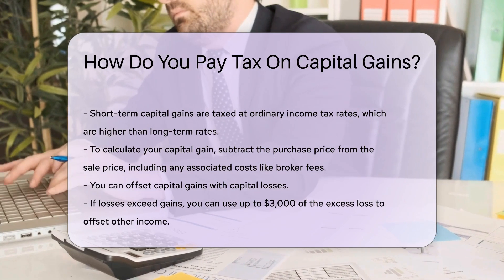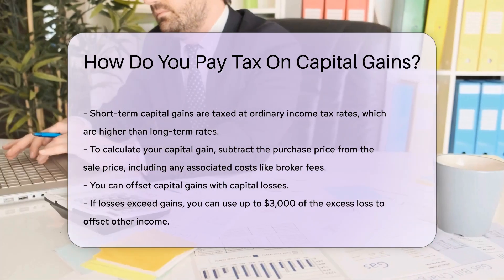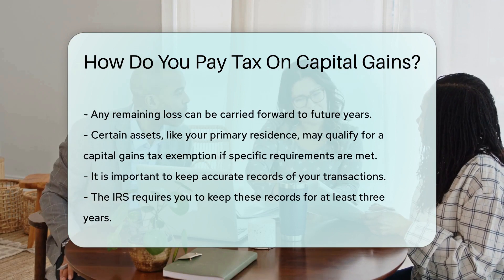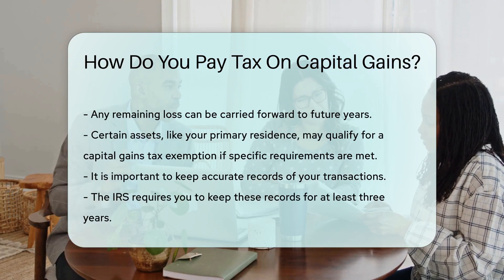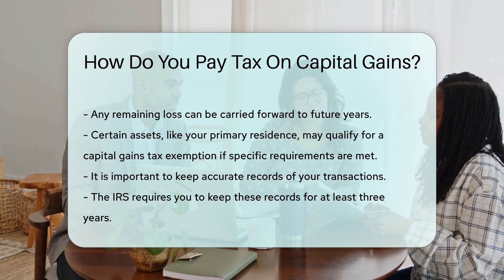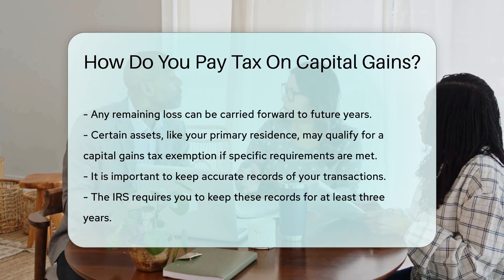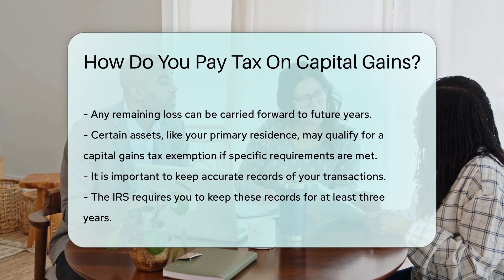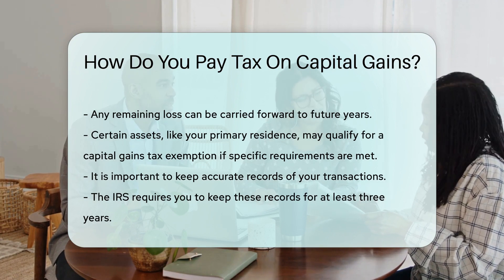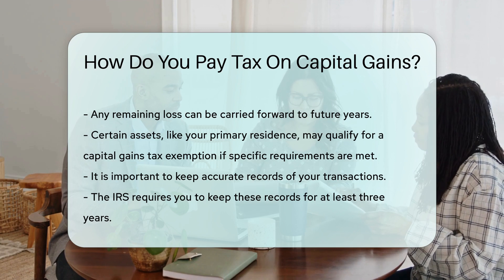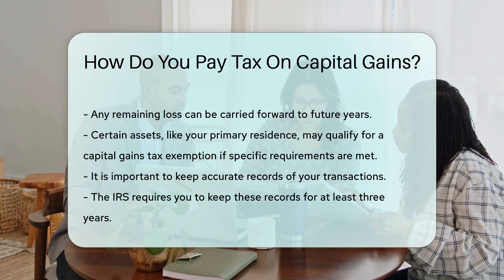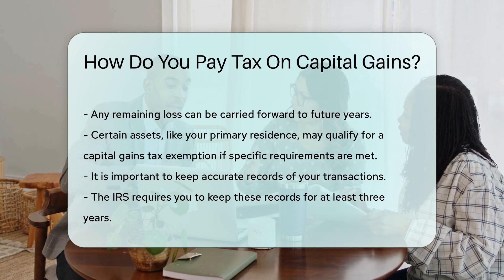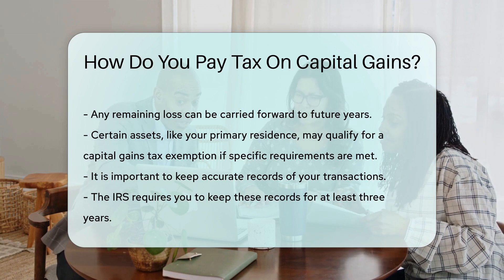Certain assets are exempt from capital gains tax. For example, the sale of your primary residence may qualify for an exemption, but specific requirements must be met. Keep records of your transactions — accurate records help ensure you report your gains and losses correctly. The IRS requires you to keep these records for at least three years.